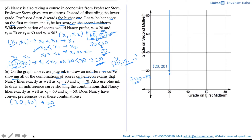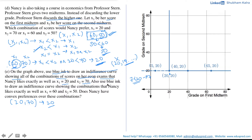We now look for other combinations that give Nancy a score of 20. Consider (40, 20): the lower grade is 20, so she scores 20 — this lies on the indifference curve. Similarly, (65, 20) also lies on the indifference curve. However, a point like (5, 20) gives a score of 5, so it does not belong to the indifference curve.